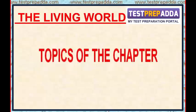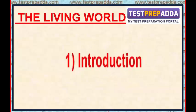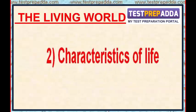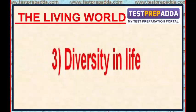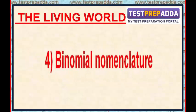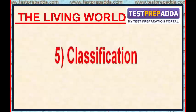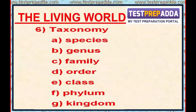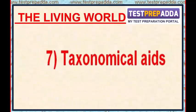In this chapter, we are going to discuss these topics: number 1, introduction; number 2, characteristics of life; number 3, diversity in life; number 4, binomial nomenclature; number 5, classification; number 6, taxonomy — in which different categories are species, genus, family, order, class, phylum, and kingdom; and number 7, taxonomical aids.